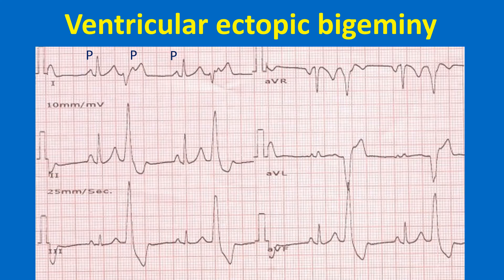The ECG shows ventricular ectopic bigeminy. Clinical findings will be pulsus bigeminus and intermittent cannon waves, as alternate P waves fall on the ST segment. When P waves fall on the latter part of the QRS, ST segment, or T waves, cannon waves can be expected, as the QT interval roughly represents the electrical systole of the ventricle. Diastole ends and systole starts at the peak of the R wave. When a P wave occurs during ventricular systole, the atrioventricular valves are closed and a cannon wave occurs.